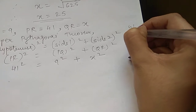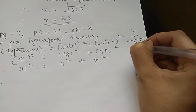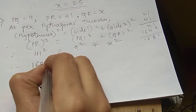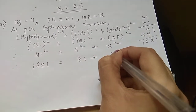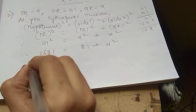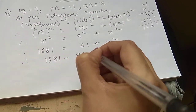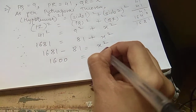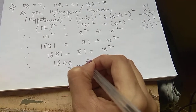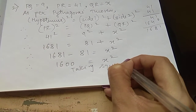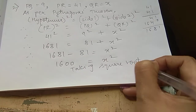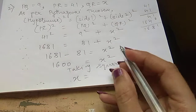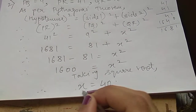41 square is 1681. 9 square is 81, and x square. So 1681 equals 81 plus x square. 81 goes to the other side and becomes minus, giving x square equals 1600. Taking the square root, x square becomes x, and the square root of 1600 is 40.